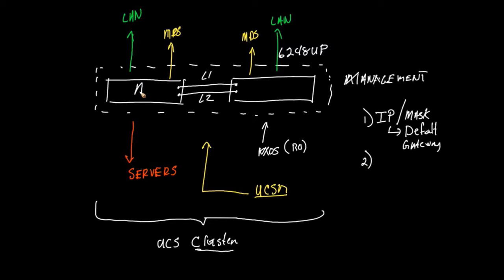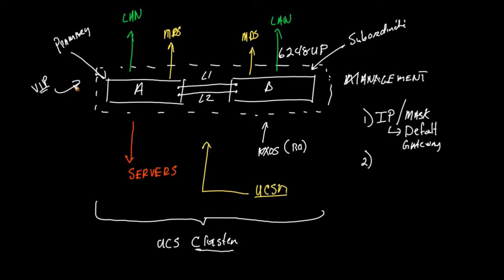I'm going to create Fabric Interconnect A and give it a name, and I'm going to create Fabric Interconnect B and give it a name. I'm going to have to select one of these to be in charge — something we refer to as the primary. We have two roles when it comes to our cluster: we have the primary and then we have what we call the subordinate. The primary is going to host a virtual IP address, so in all actuality I'm going to issue three addresses — one for each fabric interconnect and one for the virtual IP.